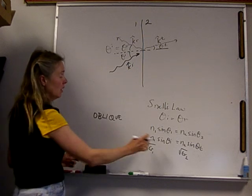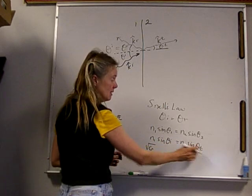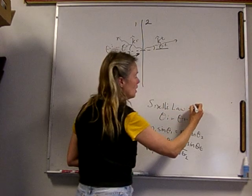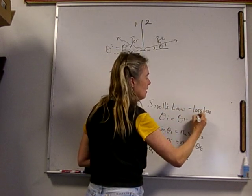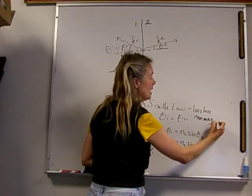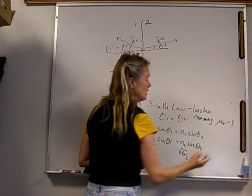So this tells us how the angle of incidence affects the angle of transmission in a lossless, this assumes lossless, non-magnetic material. Non-magnetic means that mu r is equal to 1.